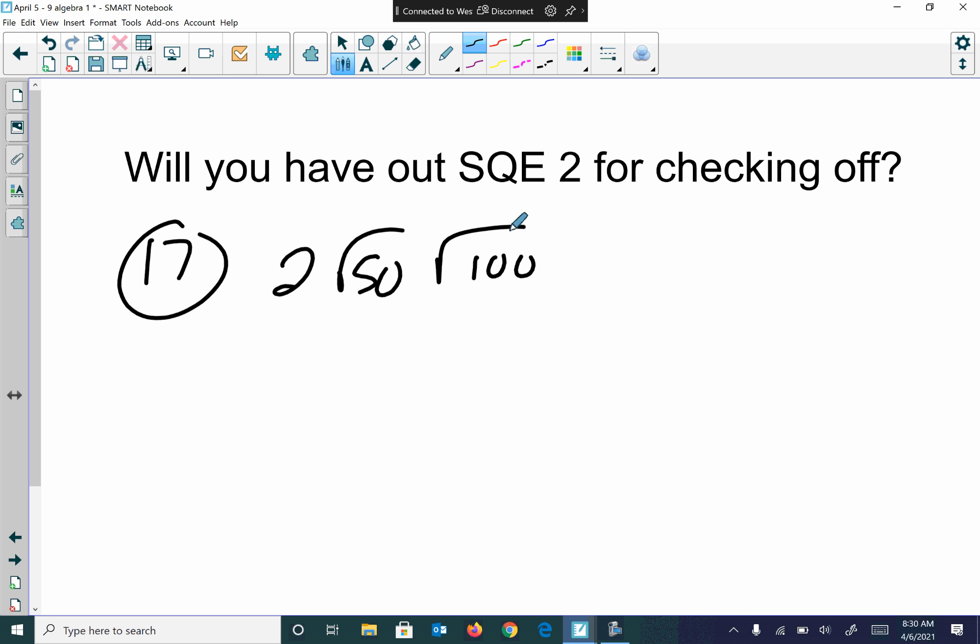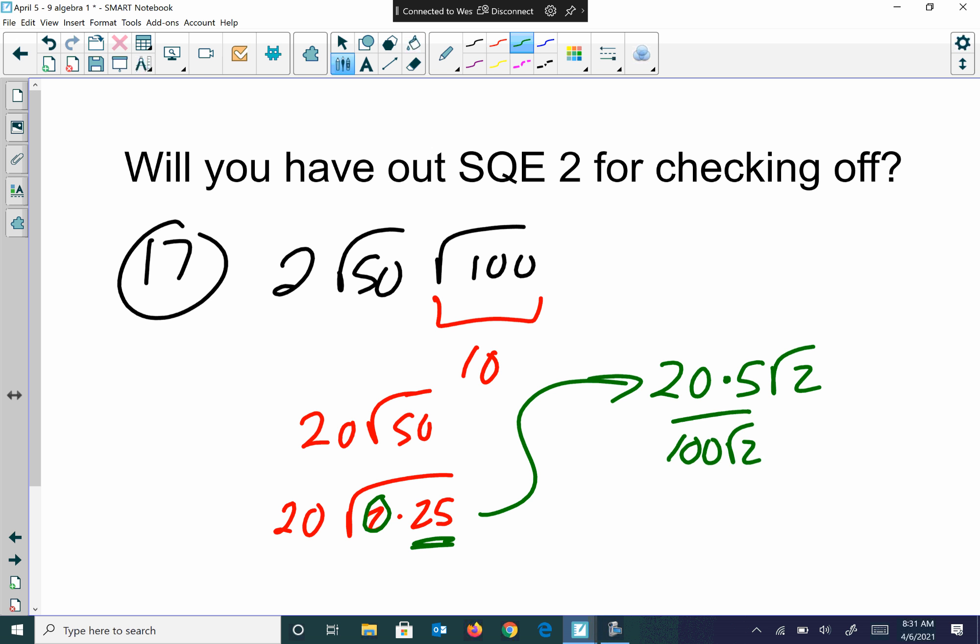So root 100 is what? 10. Okay. So we know root 100, this is just going to give me 10. So then that means we could rewrite this as 20 root 50. I could break 50 down to 2 times 25. That's going to give me 5 root 2. So 20 times 5 is 100, I believe. So I get 100 root 2.